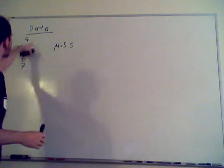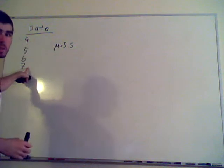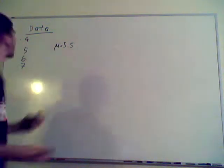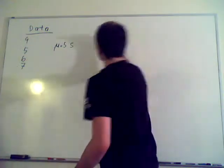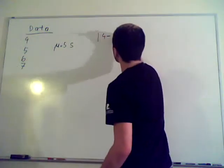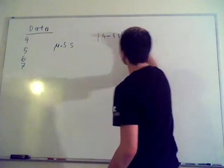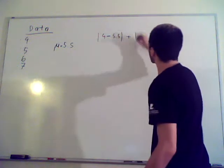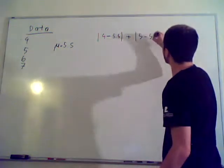Alright, so now what you do is you take each one of these guys and subtract the average from it and make it positive, so absolute value. Alright, so absolute value, four minus five point five, plus five minus five point five.